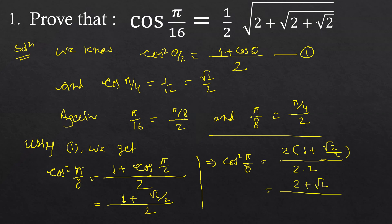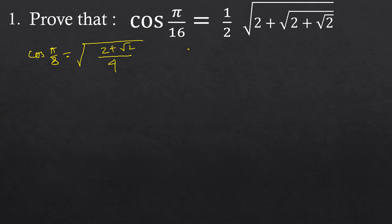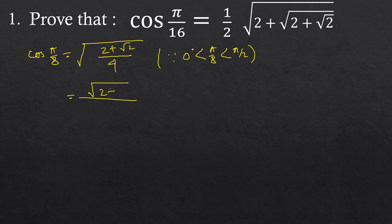That is cos(π/8) is equal to the square root of (2 plus √2) by 4. We take the positive square root here because π/8 lies in the first quadrant, since 0° < π/8 < 90°, that is π/2. Therefore cos(π/8) is equal to √(2 plus √2) by 2.